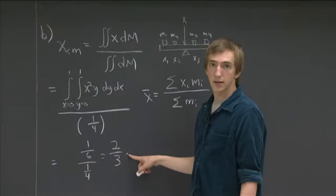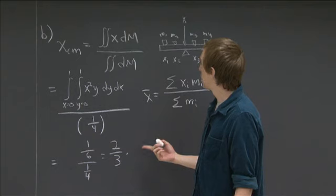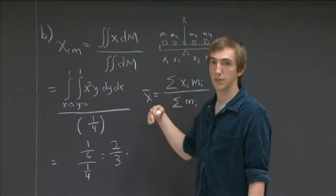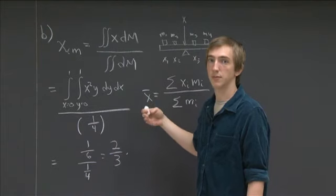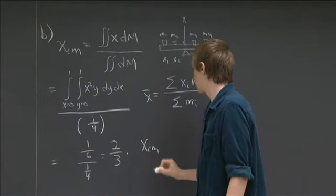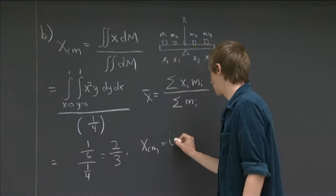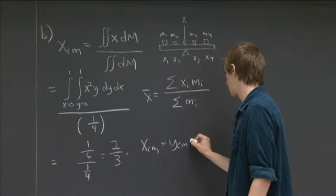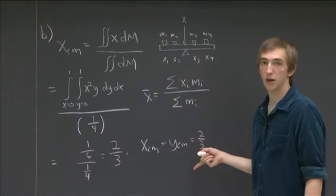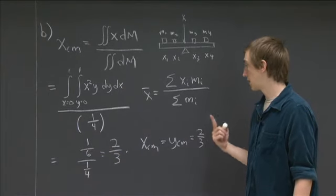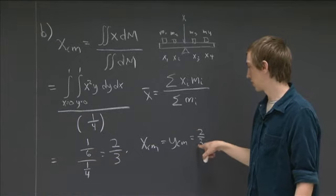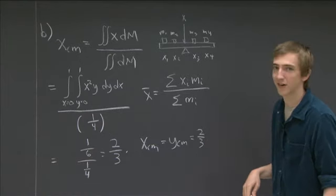So that was just the x center of mass. But now I want to make an important point, which is that this density function is symmetric in x and y. It was just x times y, it wasn't something more complicated. And so the center of mass in the x direction is just equal to the center of mass in the y direction, and so these are both equal to 2 thirds. So that depended on the fact that our density was symmetric and also on the fact that our region was symmetric about switching x and y.